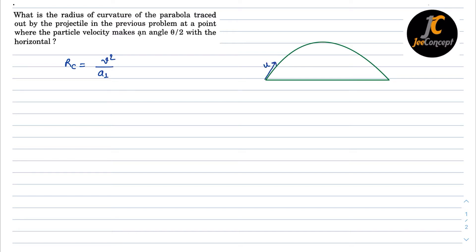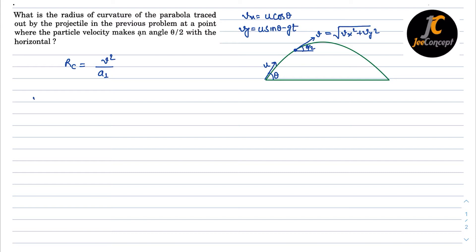The initial velocity is u which was at an angle theta, and at this particular point the velocity is making an angle theta by 2 with the horizontal. At this instance, v should be equal to sqrt(vx² + vy²), and we know that vx is always equal to u·cos(theta) and vy is equal to u·sin(theta) minus g·t. Now t is unknown to us, so we have to eliminate t.